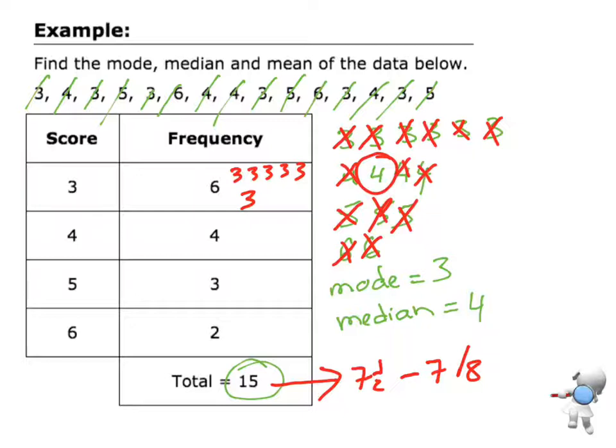So if I match that up to what I just did, one, two, three, four, five, six, seven, the four is in the eighth position. So that's what I'm looking for is I'm looking for the number in the middle. Seven numbers below, seven numbers above. That means the position number eight is my middle.